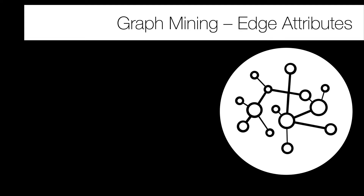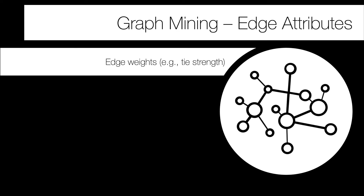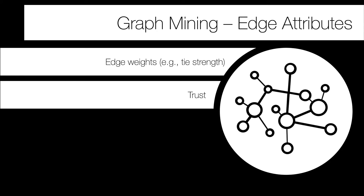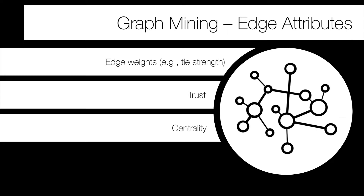For edge attributes, we might look at edge weights and tie strengths to infer how strongly connected two nodes are. Related to this is trust — understanding how much two nodes trust each other for secure messaging or chain of ownership. Edge centrality is also important, as we discussed in the context of modularity and community detection — identifying edges that, if removed, break or bisect the graph. Pathfinding is another edge-related task.